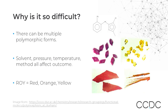ROY stands for red, orange, yellow. This is because this molecule forms many conformational colour polymorphs — each a different crystal structure. Due to the chemical nature of the molecule, these vary in colour from purple to deep red to orange to yellow, depending on the molecule's planarity in the crystal. ROY has 13 characterised distinct polymorphs, but it seems the more experimentalists search, the more they find.